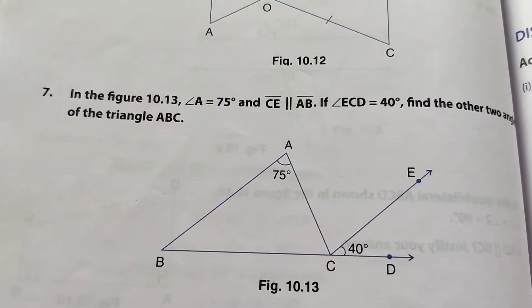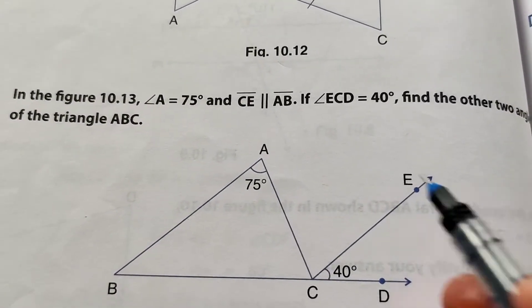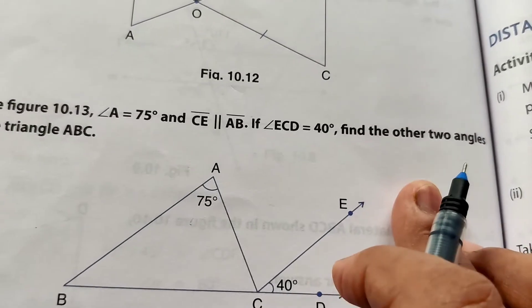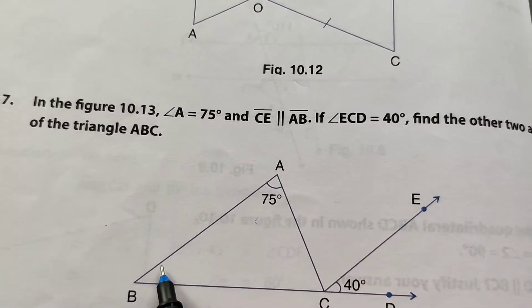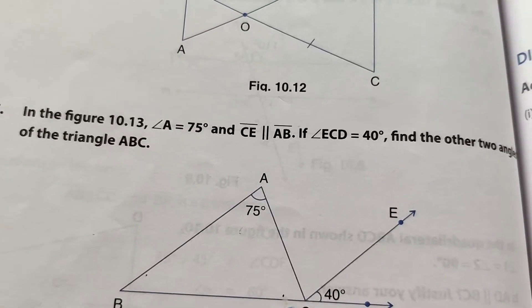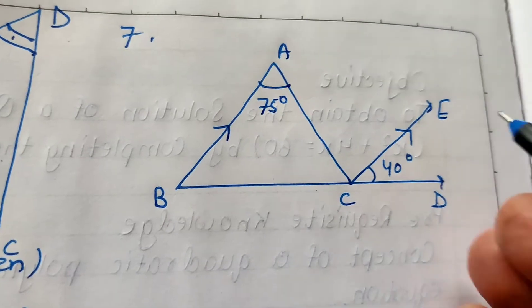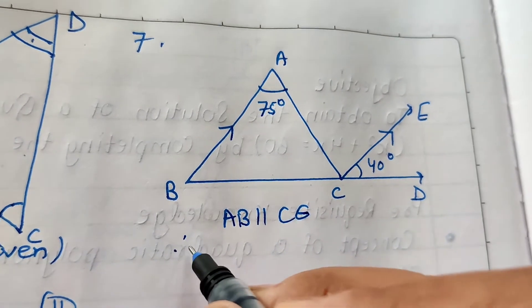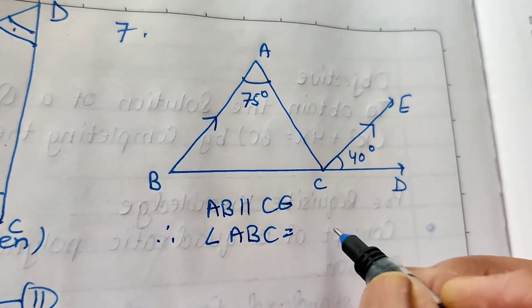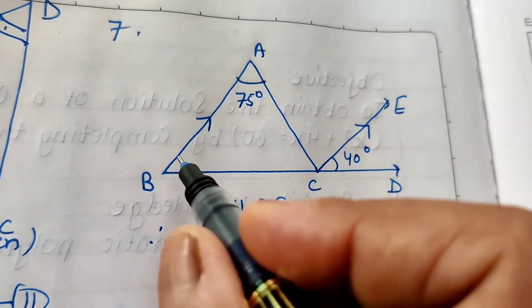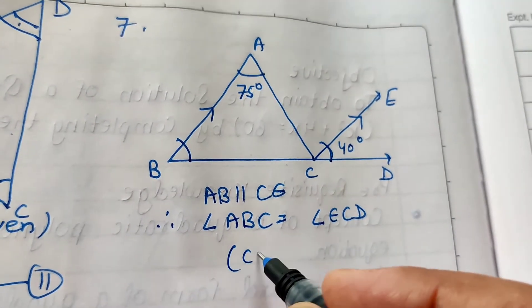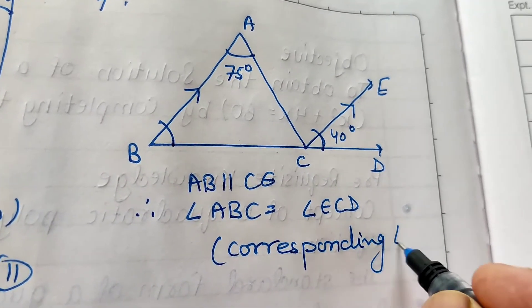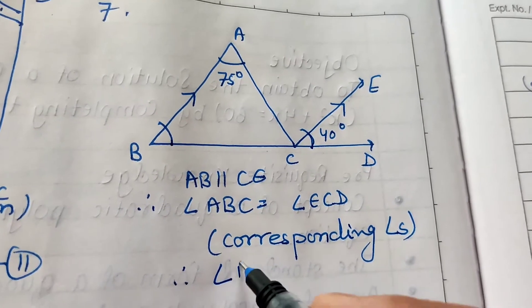Question 7: In figure 10.13, angle A equals 75 degrees. Line CE is parallel to AB. If angle ECD equals 40 degrees, find the other two angles of triangle ABC. Since CE is parallel to AB, angle ABC equals angle ECD by corresponding angles. Therefore angle B equals 40 degrees.